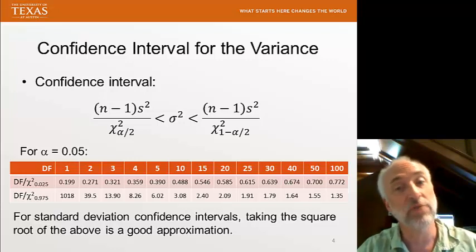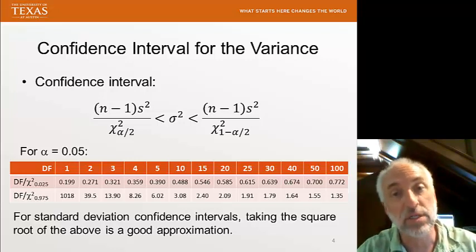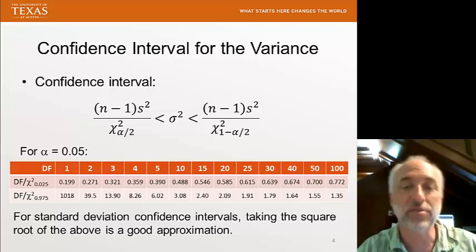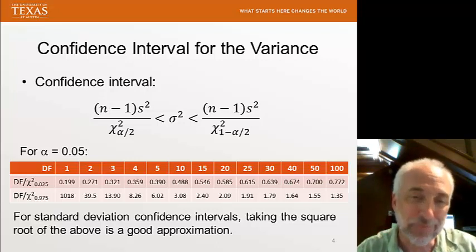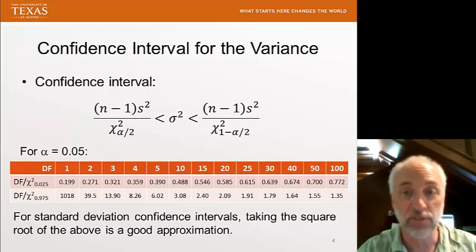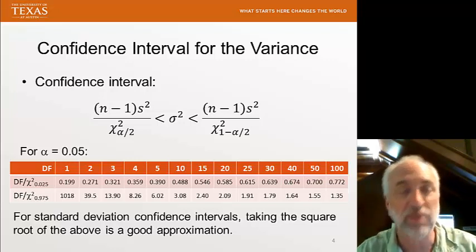Now, this is the confidence interval of the variance. If we want to put a confidence interval around the standard deviation, it is a reasonable approximation to simply take the square roots of the confidence interval endpoints for my variance confidence interval.